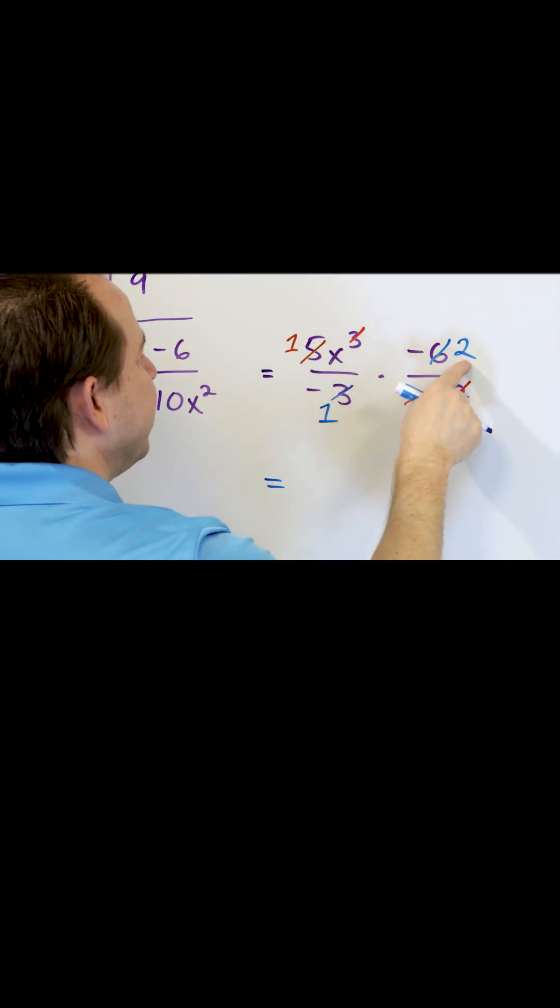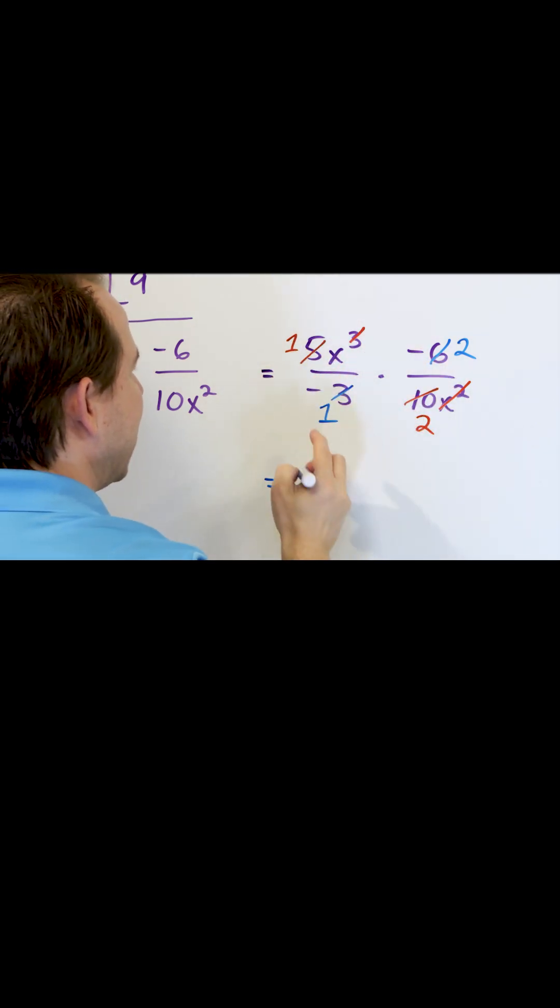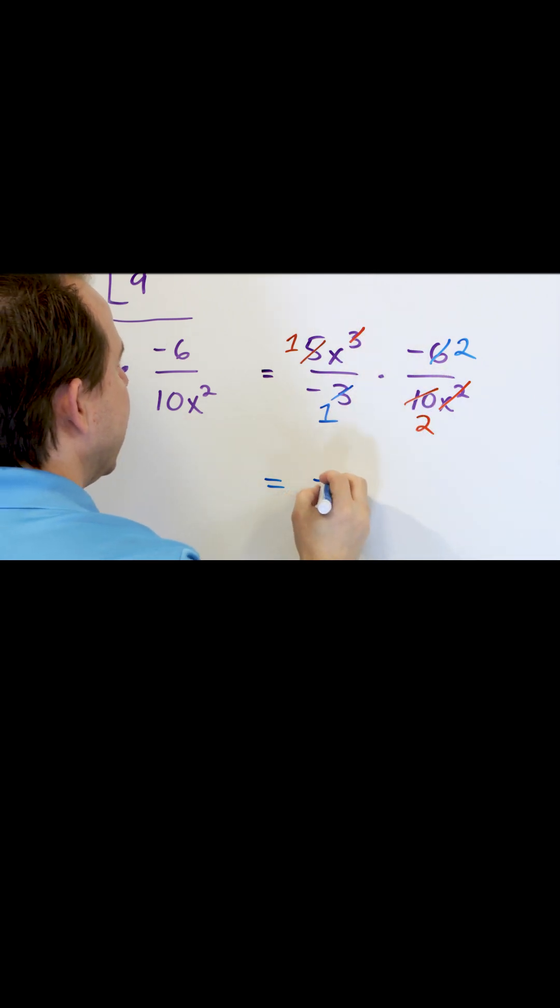On this side, I have 1x, and then I have a negative 2. So x times negative 2, when I multiply the tops, will be negative 2x.